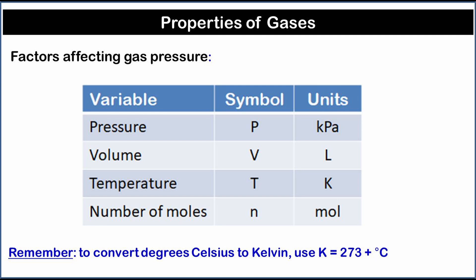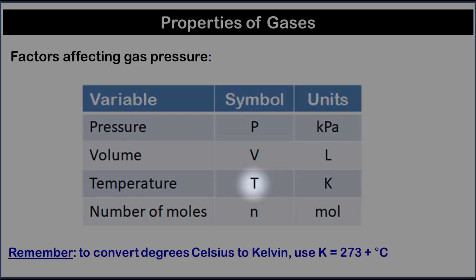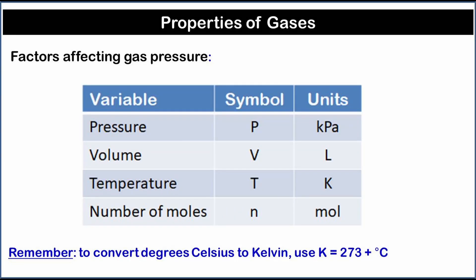Four variables are used to describe a gas. These variables are pressure, volume, temperature, and number of moles. The table shows the symbol and unit for each variable. Important remark, these units have to be used with the gas laws.